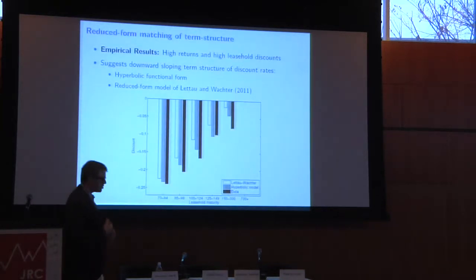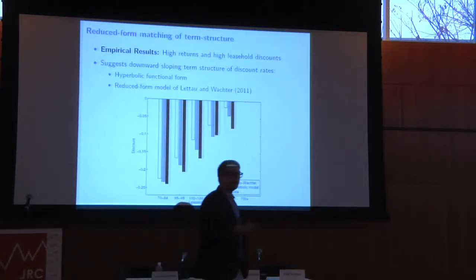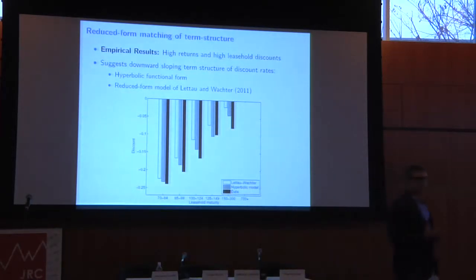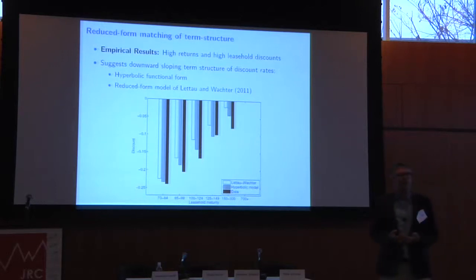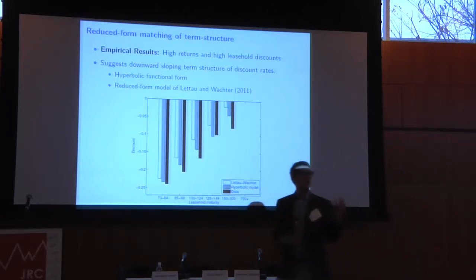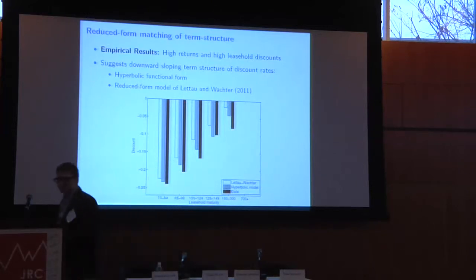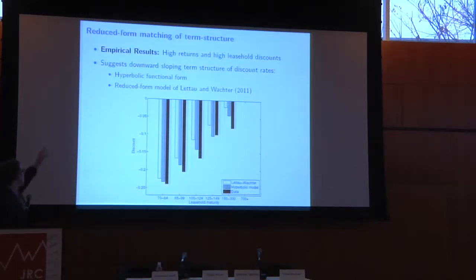Rather than providing a structural model, we provide a reduced-form functional form of what the term structure of discount rates would have to look like in order to match both the high average rate of return to housing and the observed leasehold discounts. Essentially, a hyperbolic or downward-sloping functional form gets quite a lot of the way there.